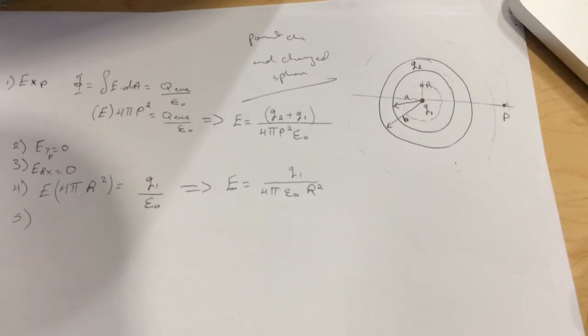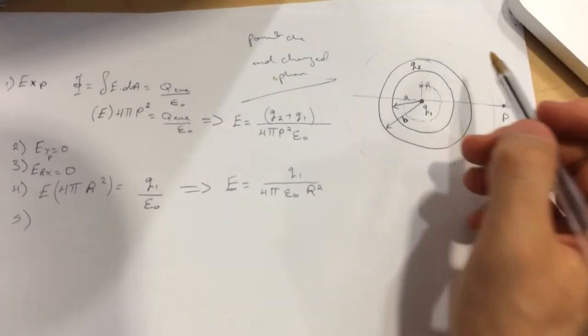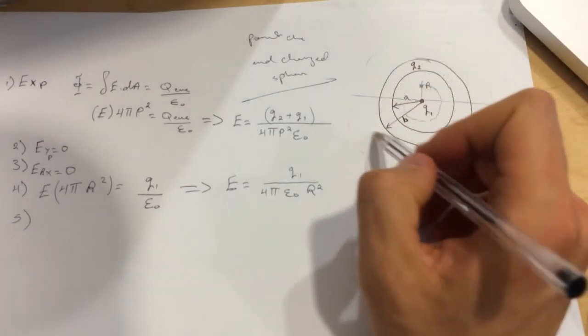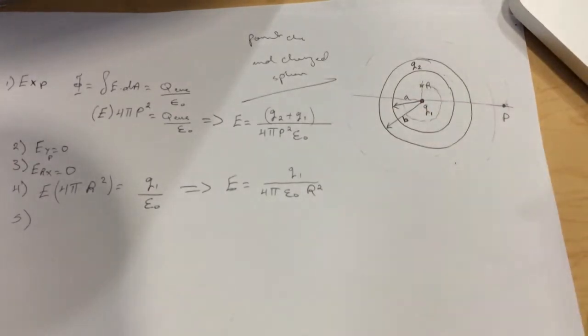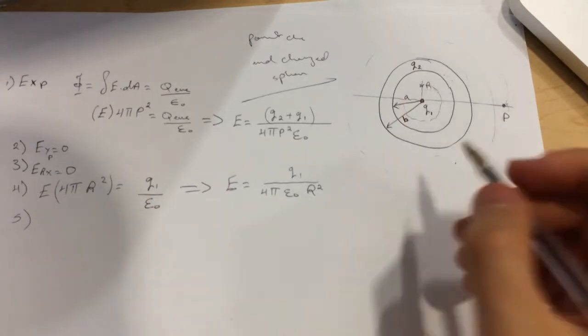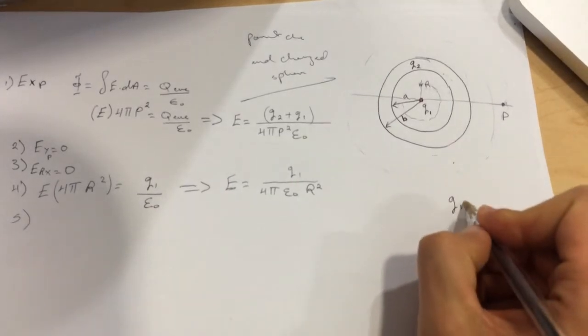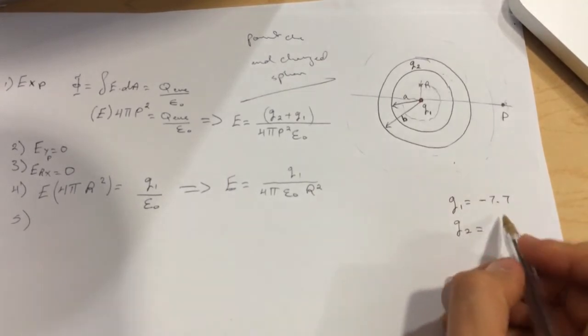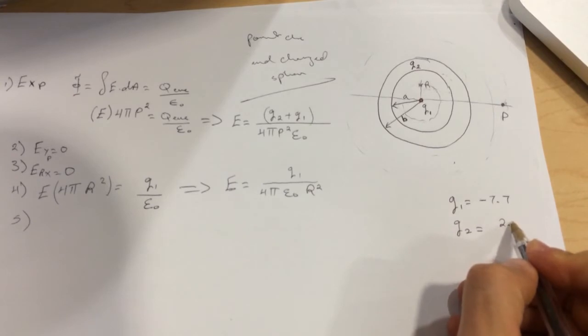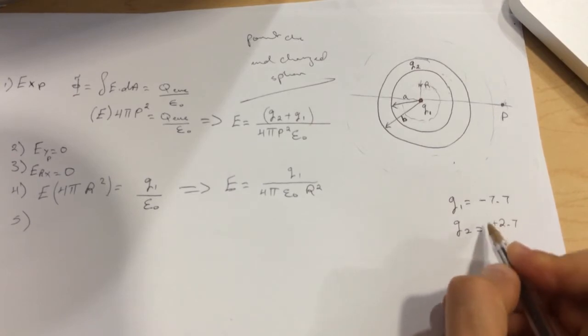E will be equal to Q1 divided by 4π epsilon naught r². It acts like a point charge. Number five is what is the sigma, what is the surface charge density of the outer edge of the shell? We got Q1 equals minus 7.7 and Q2 equals 2.7, that's positive.